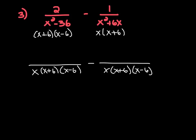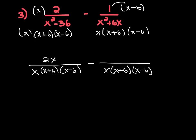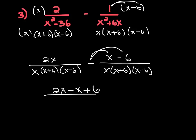So if we look at our first fraction, what is it missing that our common denominator has? It's missing the x. So let's put it in the denominator, but then we also have to put it in the numerator as well. And 2 times x is 2x. What is our second fraction missing that the common denominator has? It's missing x minus 6. So let's put it in the denominator and the numerator as well. Then 1 times x is x, and 1 times negative 6 is negative 6. So now when we combine our like terms on top, we're subtracting the second numerator from the first, and keep in mind we have a negative sign again, so we're going to have to distribute that negative to both terms.